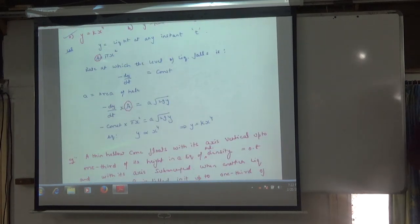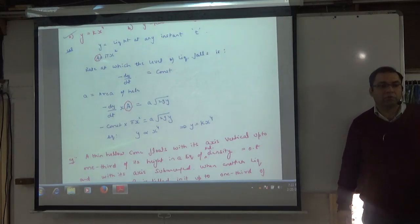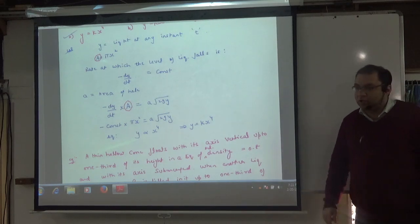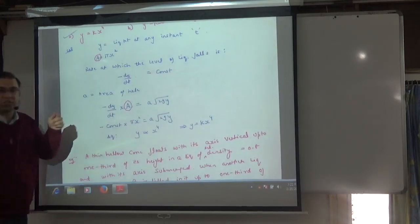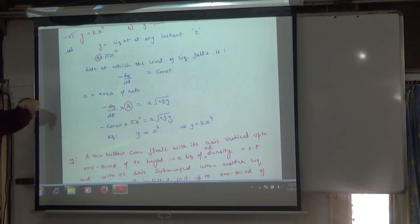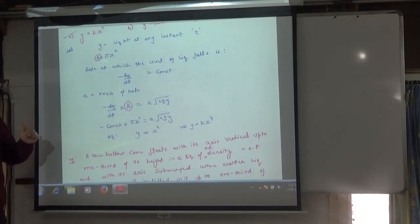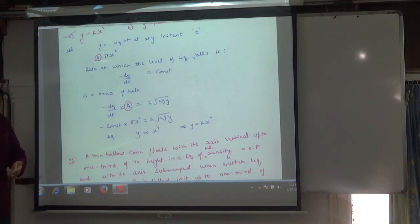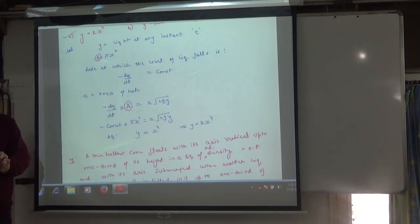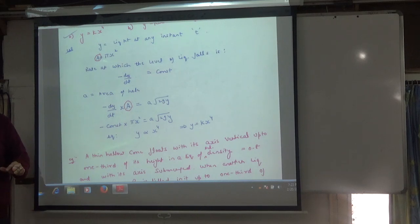When the water empties, the volume flowing out per second goes down through the hole. The volume flowing per second equals area times velocity — area is capital A, and the velocity is minus dy/dt. This type of question we have done before: the tank is emptying. It must equal the small area times the velocity of efflux, which is √(2gy), where y is the height of water at any instant.